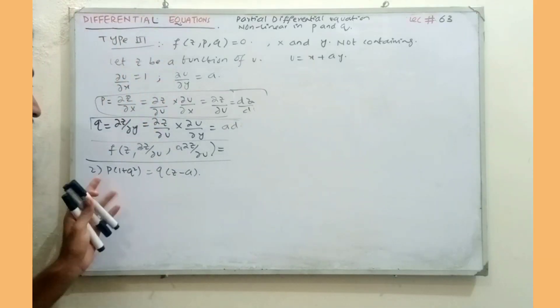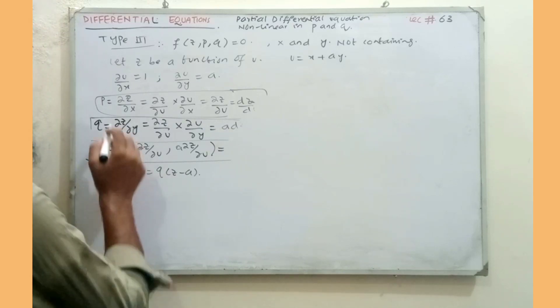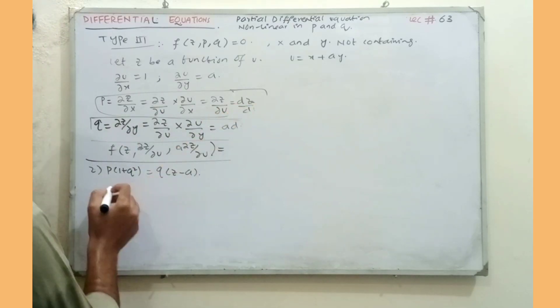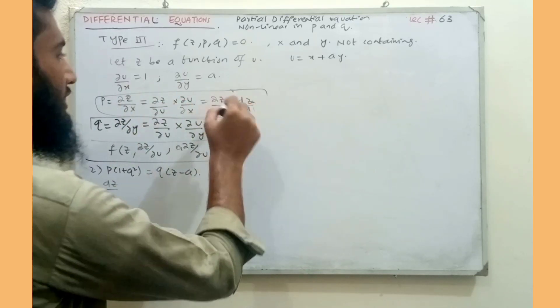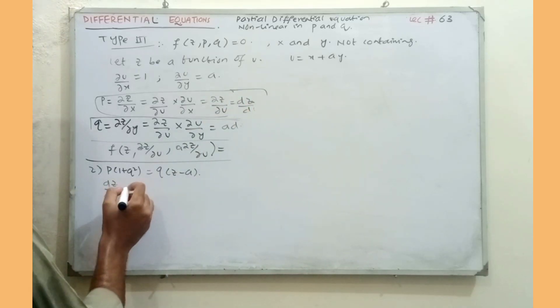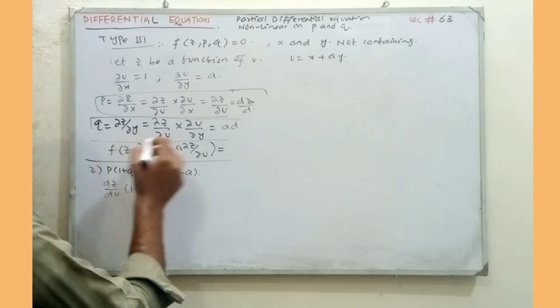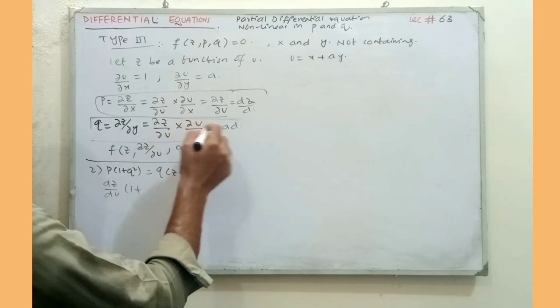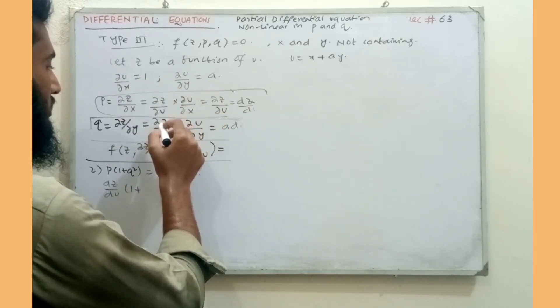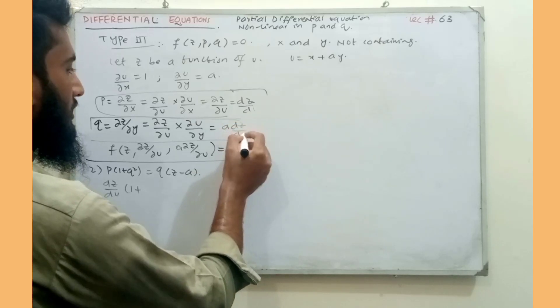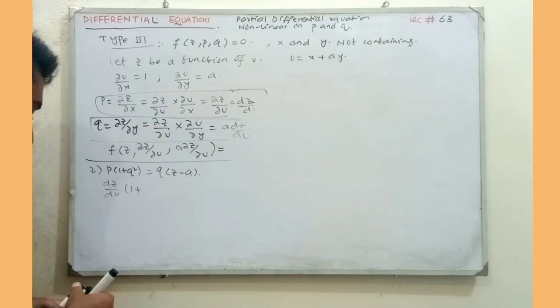Next problem: P times one plus Q squared equals Q times z minus a squared. Substituting P value dz upon du, and partial u upon partial x is one, so dz upon du. Q squared equals a squared times dz by du squared.